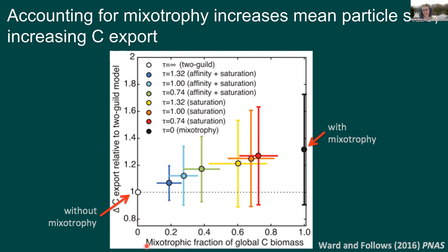Another figure from the Ward and Follows work shows the mixotrophic fraction of global carbon biomass on one axis — with higher fractions of mixotrophs — against the amount of carbon being exported relative to the model run with no mixotrophy. As you have more mixotrophs in the biomass, you have more carbon export occurring.